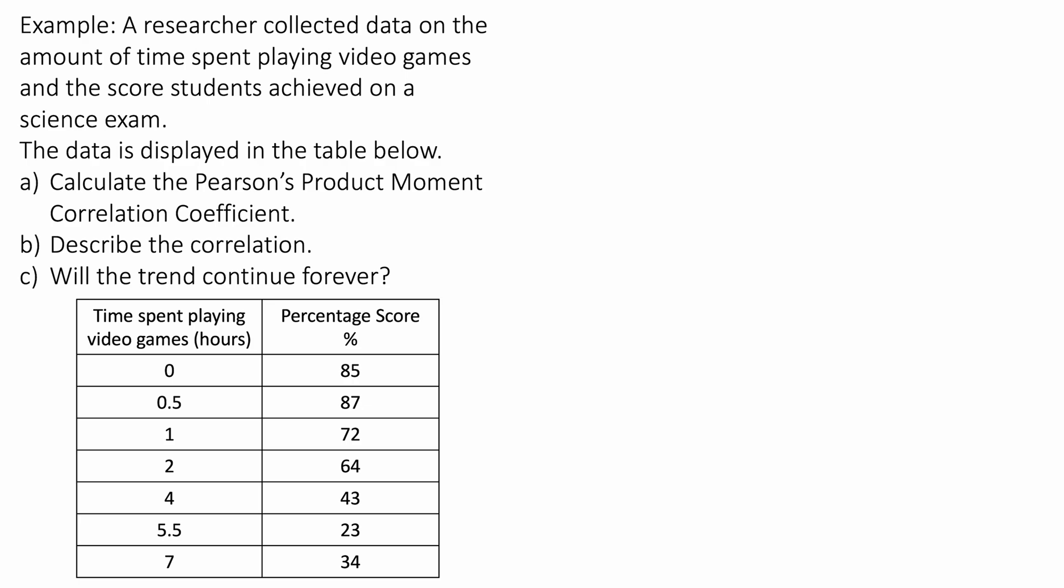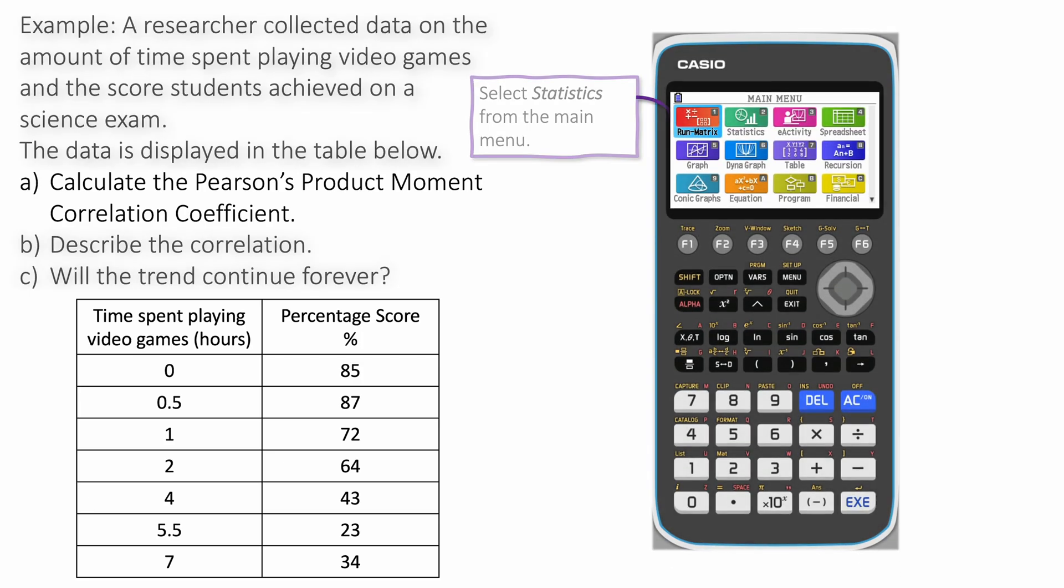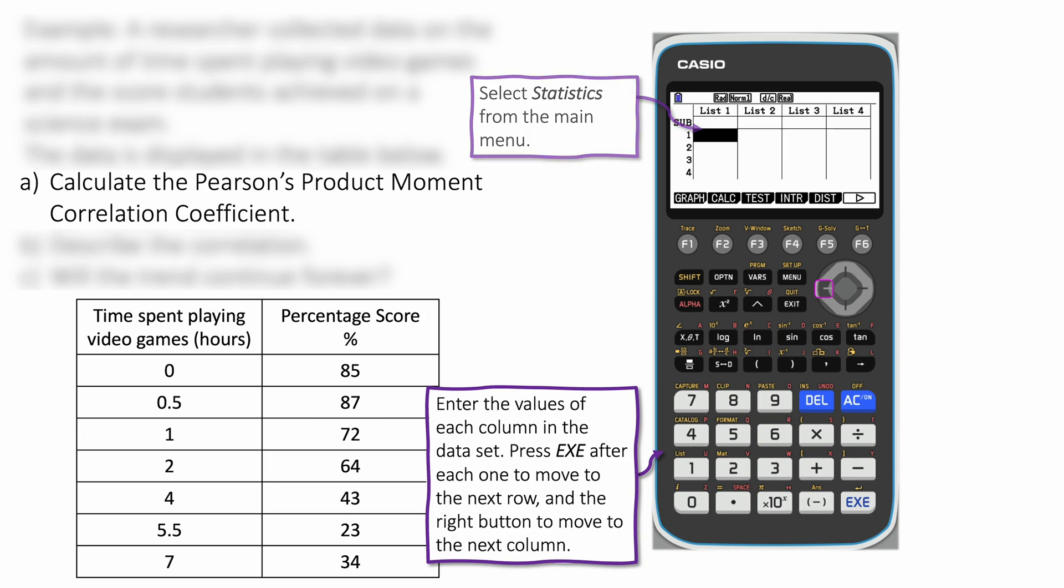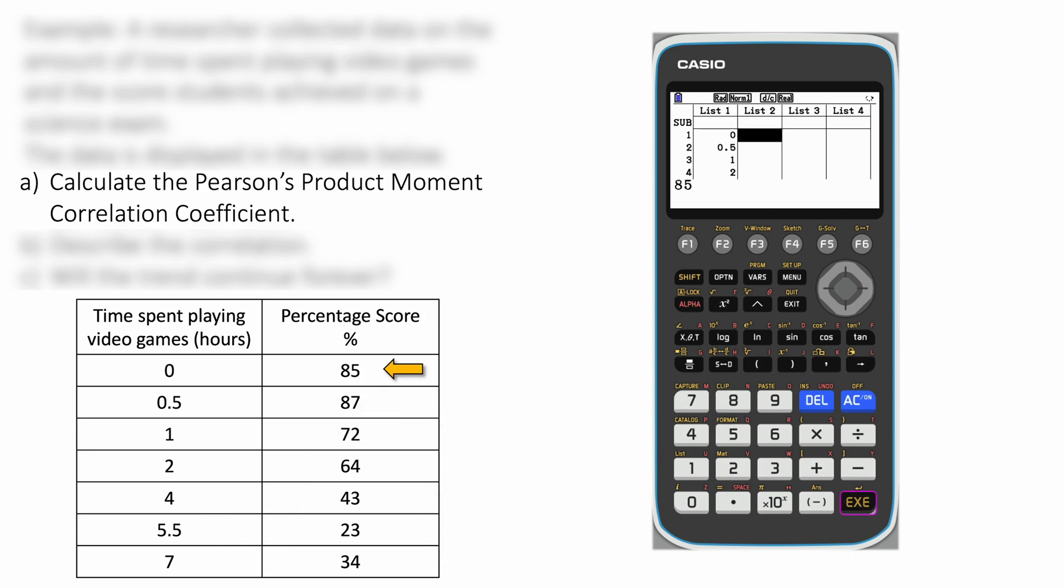Let's see how we would do this using our graphing calculator. We're going to choose statistics from the main menu and go into the table. We're going to start entering our data: 0, 0.5, 1, 2, 4, 5.5, 7, etc. Now we're going to enter in our percentage score. We move to the next column by clicking right and enter our data again. After each row we click exe to move on.